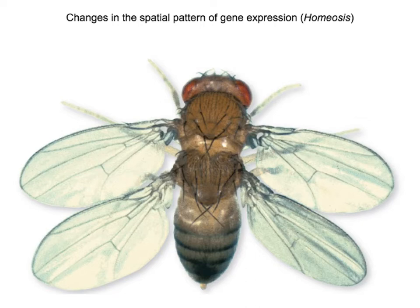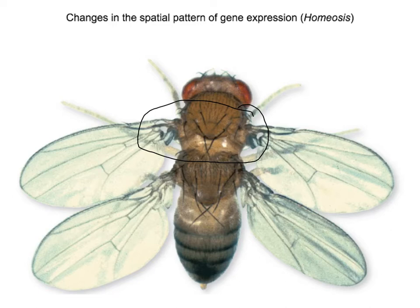Another change that can happen is a difference in the spatial location where the genes are activated. This is an example of a mutation in Drosophila, in which the fly usually has just a single pair of wings — one segment has just one set of wings. But in this individual, the gene that controls the development of that segment expresses itself again in the following segment. So this fruit fly has two pairs of wings when it should have just one. A change in the location where the gene is activated resulted in this fruit fly having two wing segments.